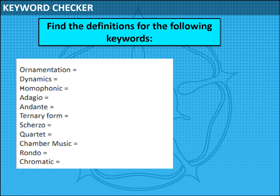Chamber music is music composed for a small group of instruments. Rondo, remember, is that return — there's a subject that keeps returning, so we would depict that as A, B, A, C, A, D, E, etc. And chromatic is using every available note from one to the next — so if we were going from C to E, the chromatic notes between that would be C, C sharp, D, E flat, E.